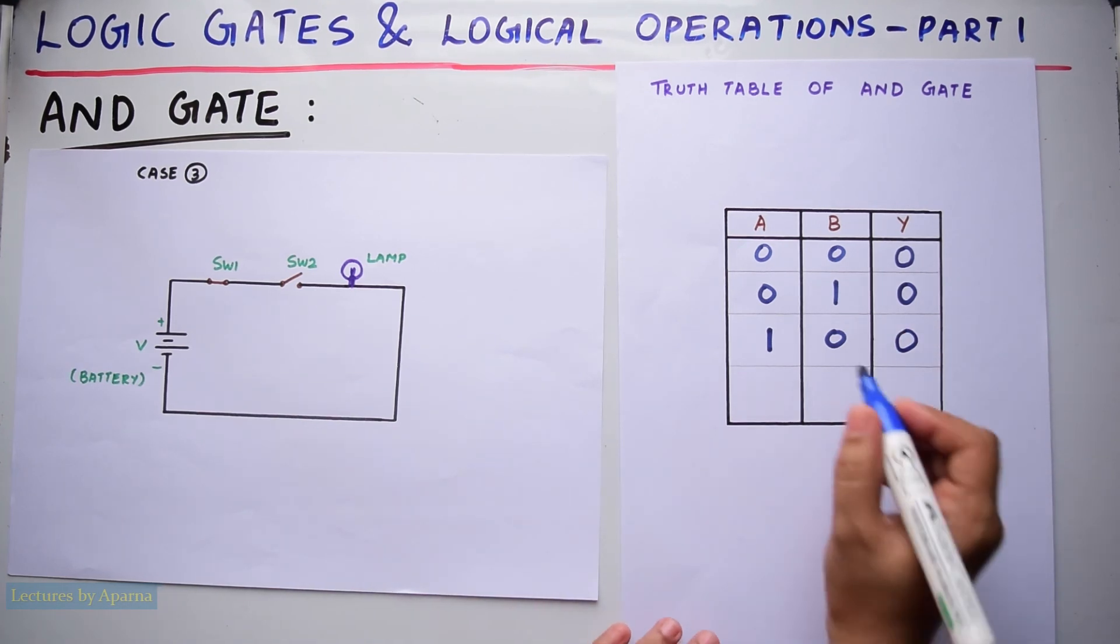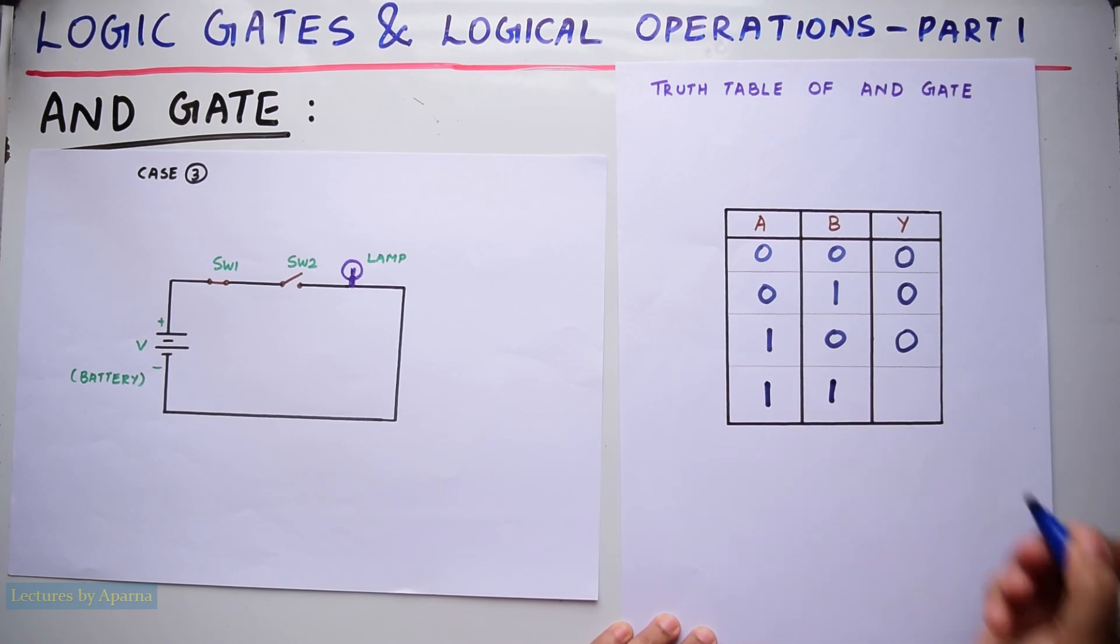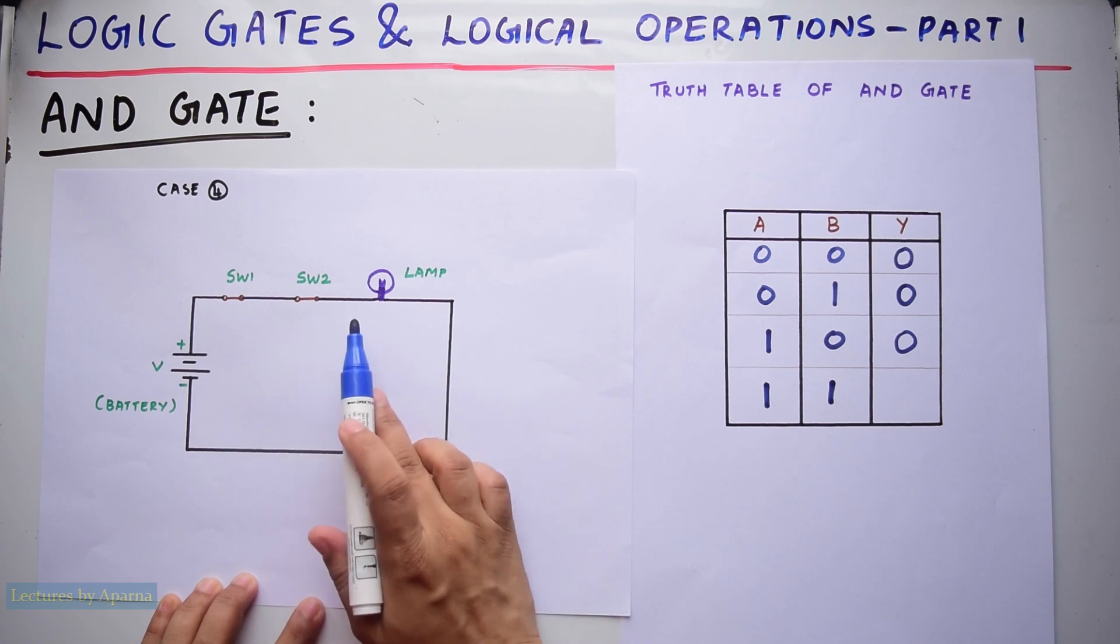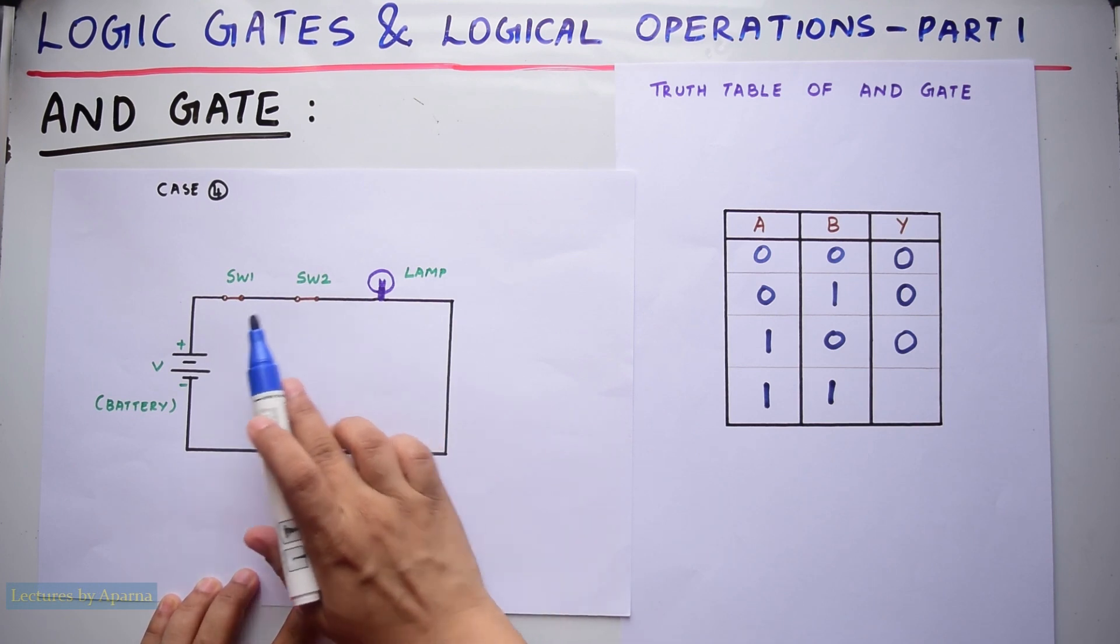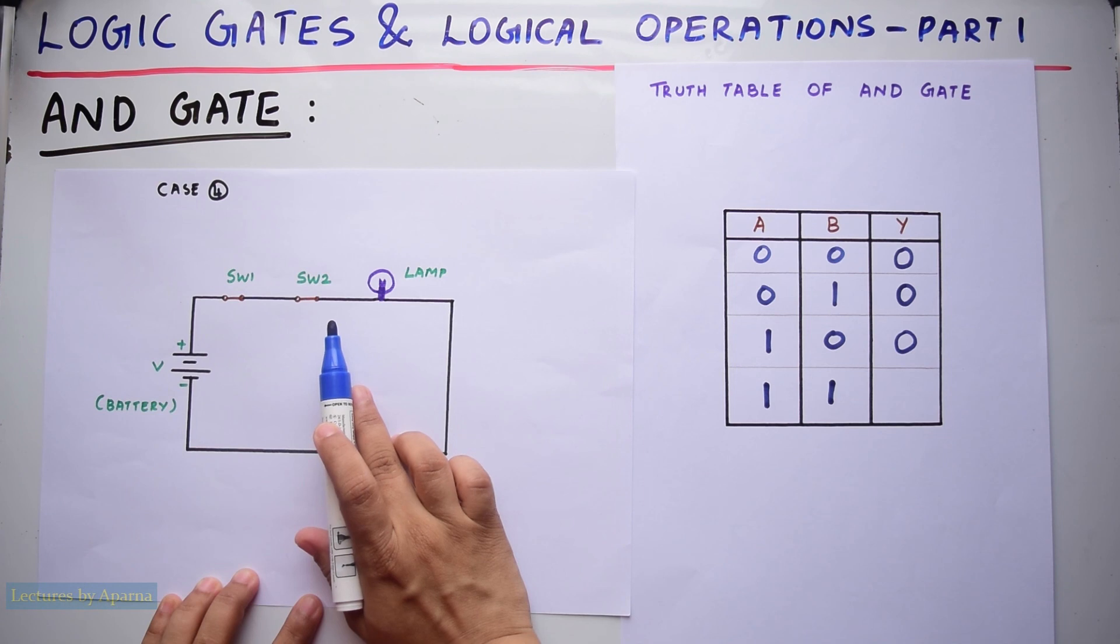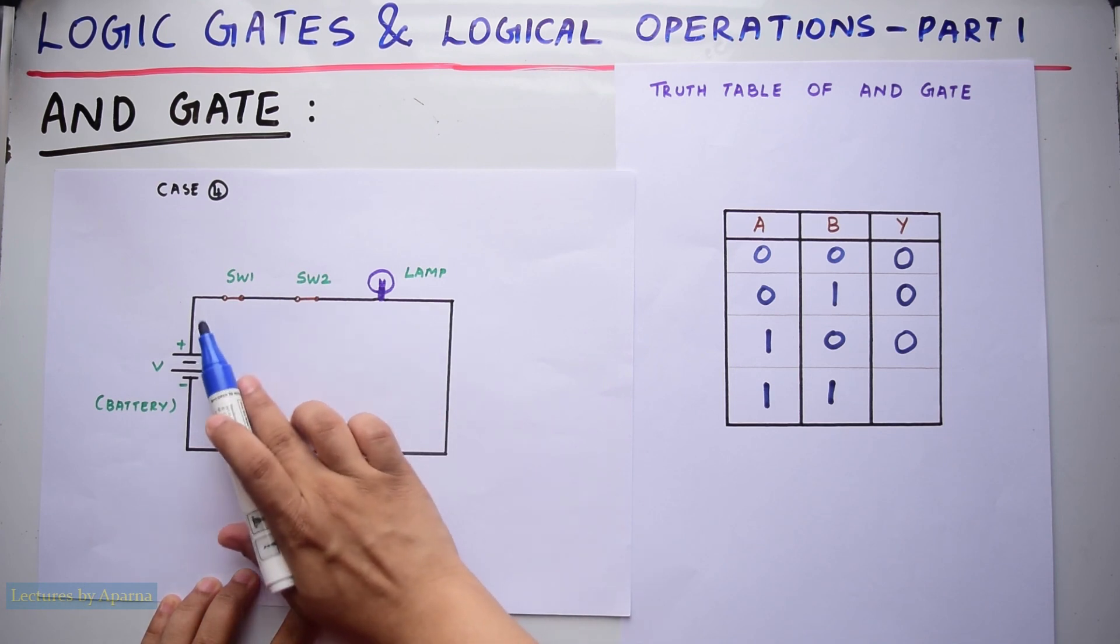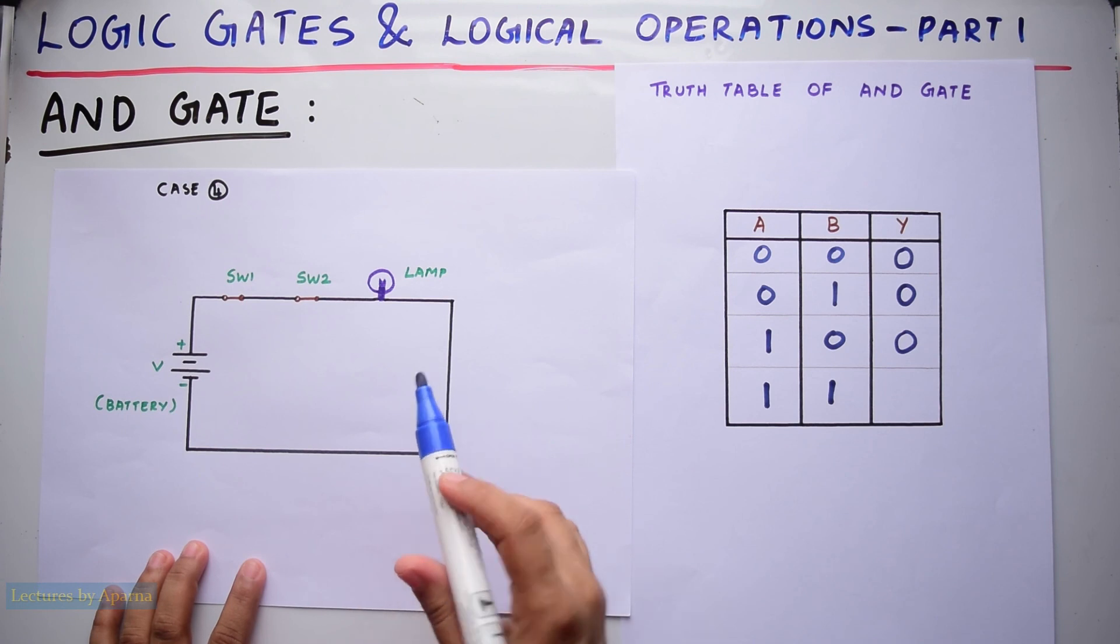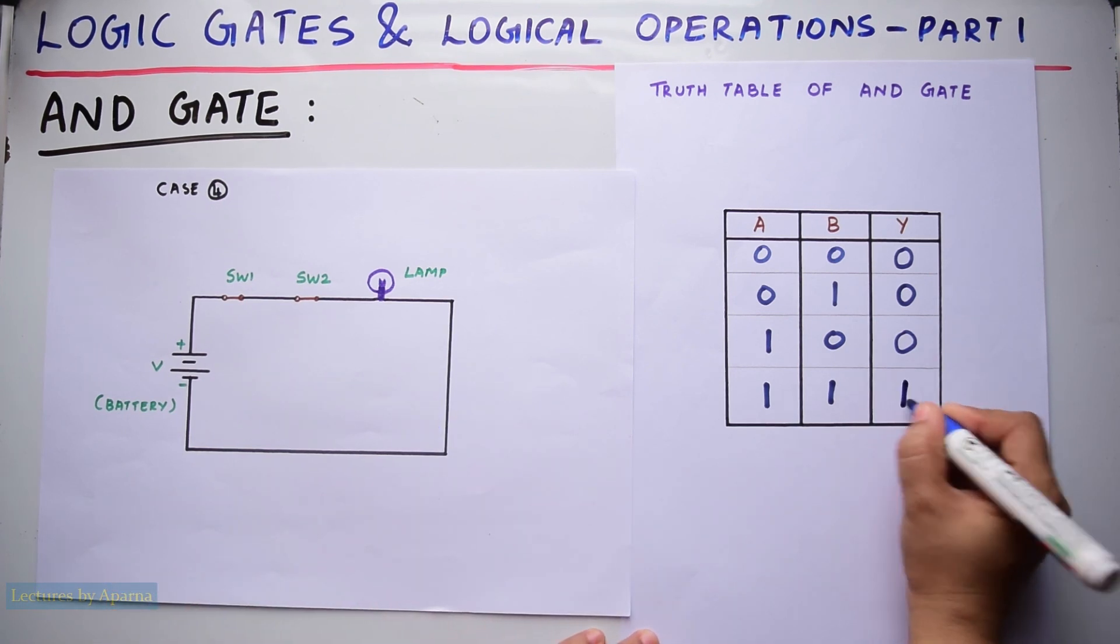Now consider the last case, that is A equals 1 and B equals 1. Here both switch 1 and switch 2 will be ON. It means the lamp is now connected to the battery through this path. So the lamp will be lit and so the output will become logic 1. That is, Y will become 1.